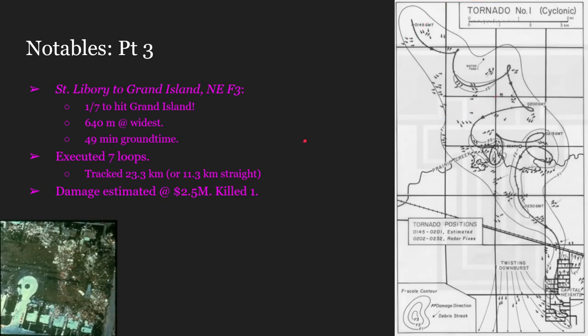Our third notable is our first of seven to affect the Grand Island, Nebraska area — a crazy amount to hit just one town in just one night, and very scary to think about. This tornado actually started in St. Liberi and moved south to Grand Island, Nebraska, and was an F3.